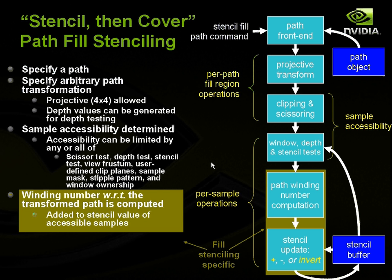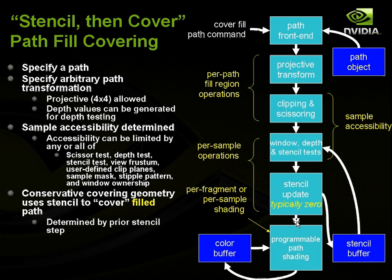Now let's look at the cover step. Taking the same path object through the path front end, we do our transform, clip and scissor if enabled, and do ownership tests. With the stencil test set to not-equal zero, things that are zero don't survive, but non-zero samples have a stencil update applied — we typically zero the stencil buffer or replace it with some other value. Then we perform whatever programmable fragment shading we want and update the color buffer. That's how we get a path rendered.